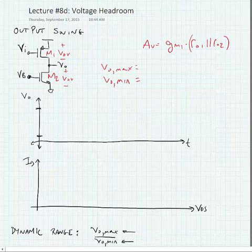The maximum output voltage is simply VDD minus one VOV, and the minimum output voltage is simply VSS, which is zero, plus one VOV.